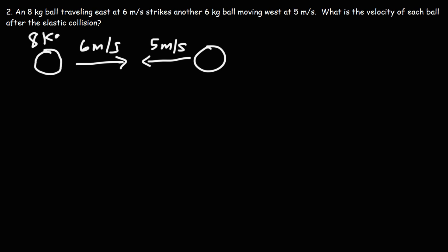So ball 1 has a mass of 8 kilograms, and ball 2 has a mass of 6 kilograms. So that's M1, this is M2. And we got V1 initial and V2 initial. So let's calculate the velocity of each ball after the elastic collision.